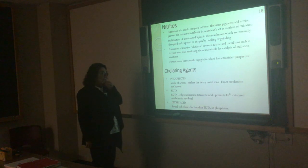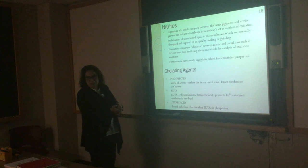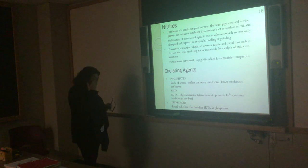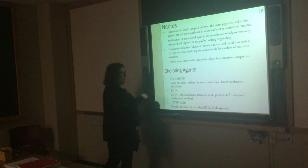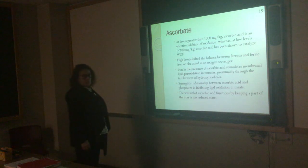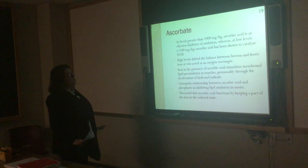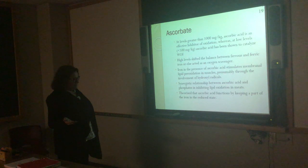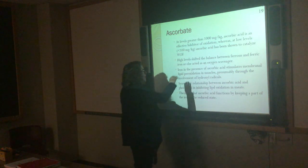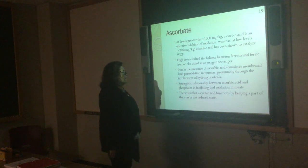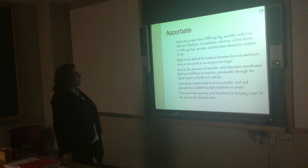EDTA is a pretty powerful antioxidant, but we are not allowed to add it to meat — we do use it in the chemistry lab when running TBARS assays to stop the reaction. Citric acid, which is less effective than EDTA or phosphates, also helps to chelate some heavy metal ions. Ascorbate, also used in cured meat, when used at a moderate level — not a really high level — is thought to shift the balance between ferrous and ferric iron, and also has some activity as an oxygen scavenger. At a high level, it can actually induce lipid oxidation.